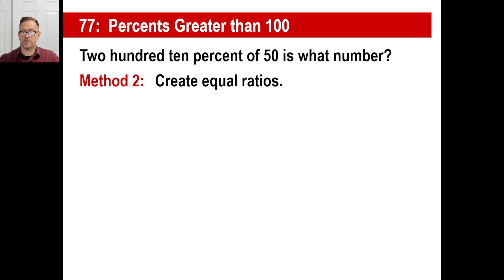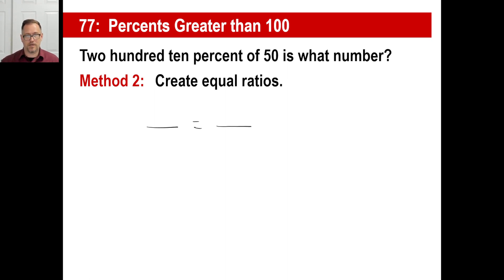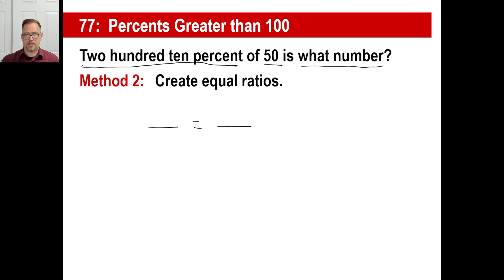Method 2: fraction equals fraction. We have 210 over 100 on the left side. Now the question is: where should the 50 go and where should the x go? If they say 210% of 50, is that more than 50 or less than 50? It's more. So the number you're looking for — x — is the bigger number, and the bigger number goes on top of this fraction. 50 goes on the bottom.